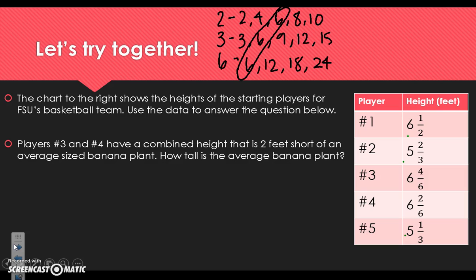So let's turn these denominators into 6 so that we can easily answer any questions. Our first one is 6 and 1 half. Let's think about how we can turn that 2 into a 6 — looking back at our multiples, it was our third one, so we multiply 2 times 3. Whatever we do to the bottom, we have to do to the top. We keep the whole number the same: 6. Then 1 times 3 is 3, and 2 times 3 is 6. So we have a new fraction of 6 and 3 sixths.